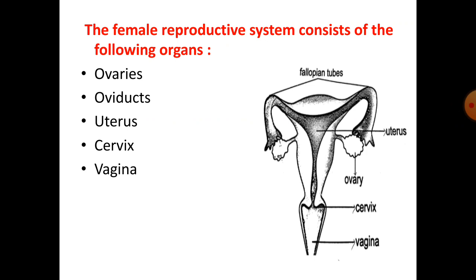There are two ovaries present. These ovaries are oval-shaped in structure and are present within the abdominal cavity. Their main function is to produce eggs or ova, and also to secrete female sex hormones called oestrogen and progesterone.